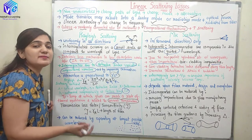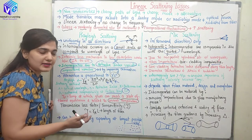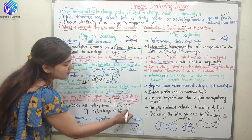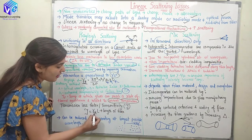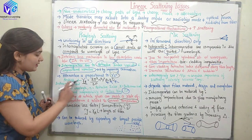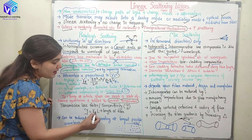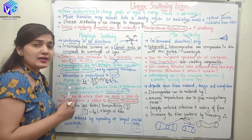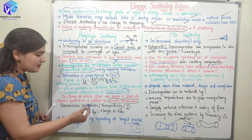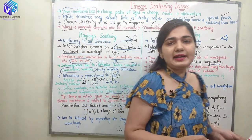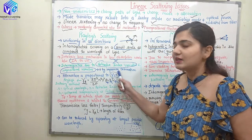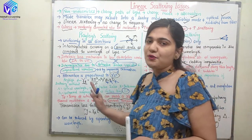The transmission loss factor or transmittivity for Rayleigh scattering is given as gamma_r multiplied by L, where L is the length of the fiber. So multiplying the Rayleigh scattering coefficient by the length of the optical fiber gives the transmittivity. Rayleigh scattering can be reduced by operating at the longest possible wavelength, as understood from this relation.